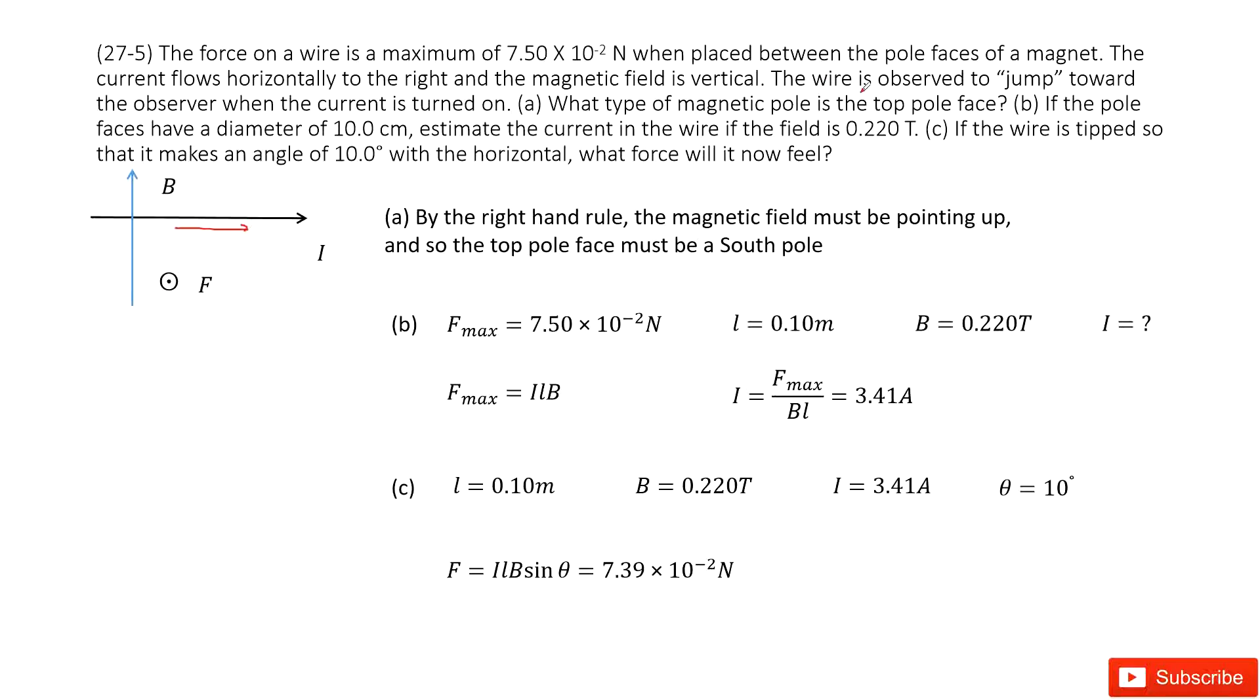And then the wire is observed to jump toward the observer. So that means your thumb should point to yourself. Your four fingers pointing to the right and the thumb pointing to yourself. When you rotate your four fingers, this must be pointing up.